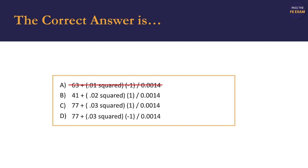Similarly, answer B starts with an uncorrected angle of 41 degrees. This corresponds with what we're given for angle C, but not angle B. Therefore, we can similarly eliminate answer B. Answers C and D, however, start with an uncorrected angle of 77 degrees. This matches what we are given for the uncorrected angle B. Our calculated correction, 0.0014 degrees, is also present in both answers C and D.